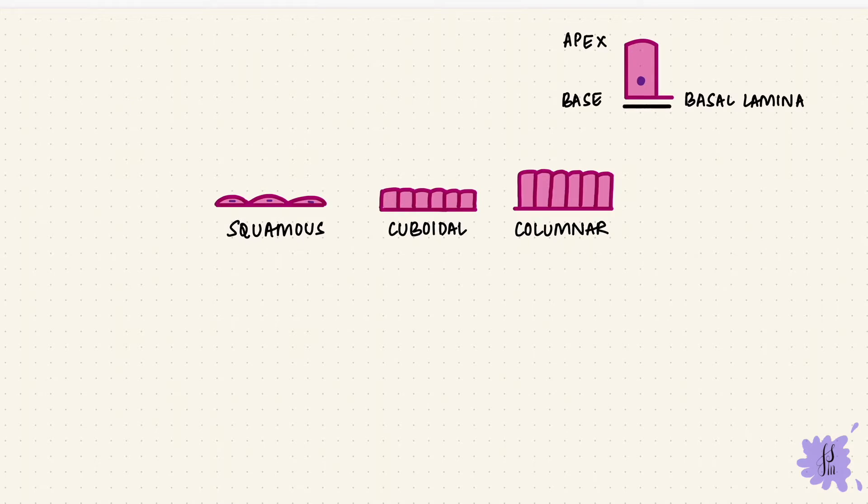Below the basal lamina is a reticular lamina and that's from connective tissue. So this whole thing forms the basement membrane. Epithelial cells sit on a basement membrane.